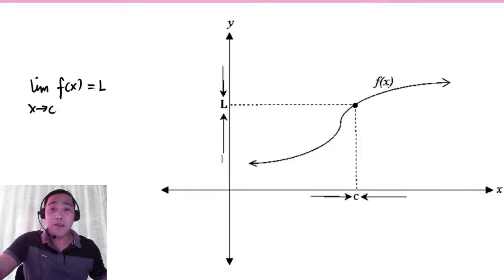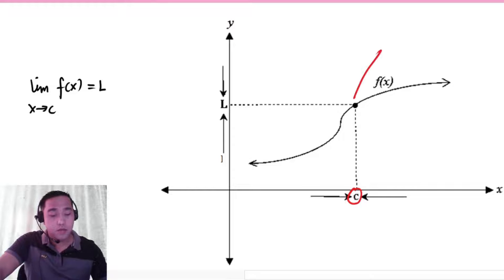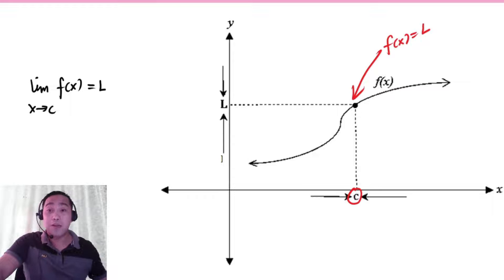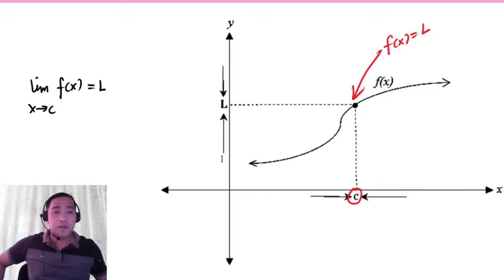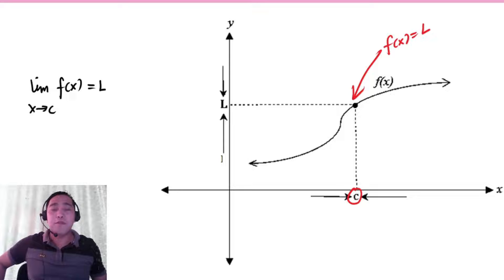As you can see, when x is equal to C, f of C is equal to L. But take note that the limit of f of x as x approaches C does not really care about what is the value of the function when x is equal to C.